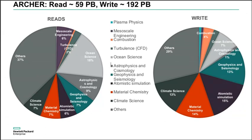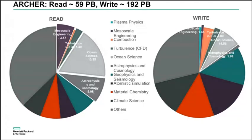There's a clear distinction between two different types of applications. Four projects — mesoscale engineering, turbulence, ocean science, and astrophysics — buck the trend: they read more data and write less. For example, ocean science reads 10 bytes and writes 14 bytes, which is very low compared to the overall trend. Mesoscale engineering reads a lot but writes very little.